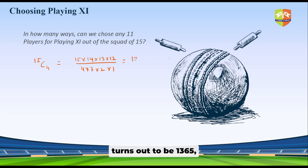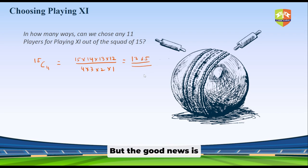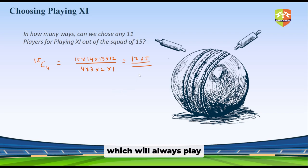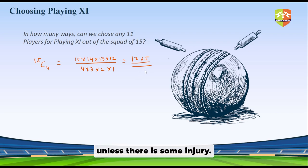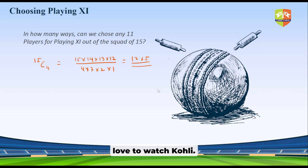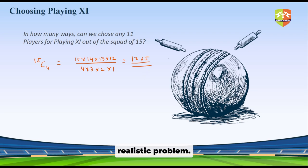If you calculate it, it turns out to be 1365 — lots of combinations to choose from. But this problem is purely mathematical in nature; it doesn't have anything to do with reality. Because in the realistic scenario, there are certain players which will always play. The captain will always play, the vice captain will almost always play unless there is some injury. Also, you must play with a wicket keeper. And if Kohli is there, Kohli will play — he is a star cricketer. So let us see a realistic problem.